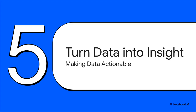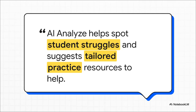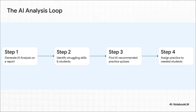Once the lesson's over and the activity is done, you're staring at a mountain of data. How do you turn all those numbers into something you can actually use without spending your entire evening on it? WakeRound's own docs put it simply: the idea isn't just to record the fact that there are learning gaps — it's about giving you the tools to immediately go in and fix them. The platform guides you through a four-step loop: with one click, the AI analyzes the report, flags the skills and students who are struggling, recommends targeted practice quizzes, and lets you assign that practice directly to only those kids who need it. It closes the loop.